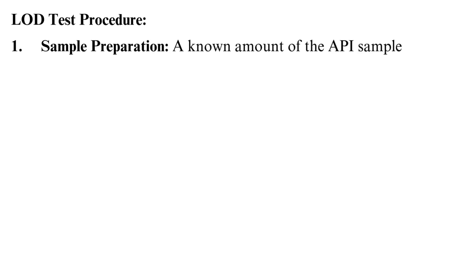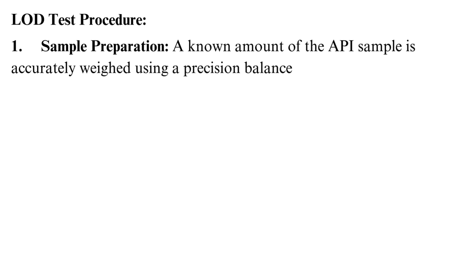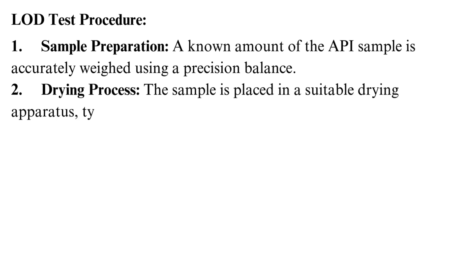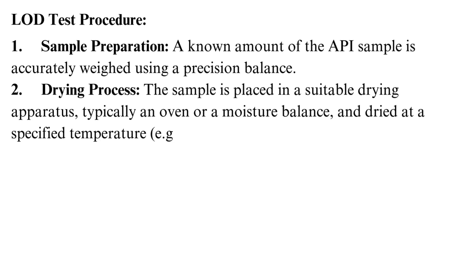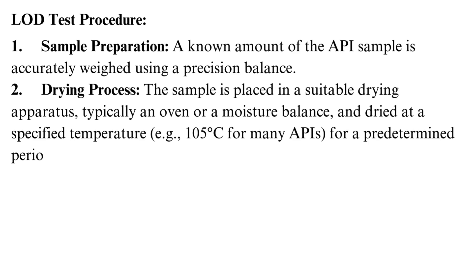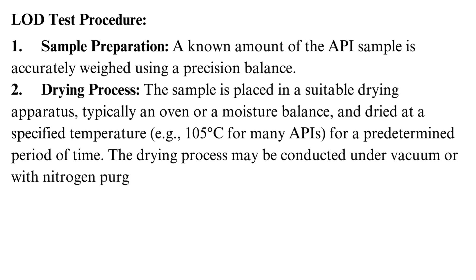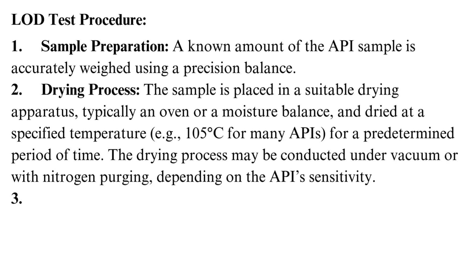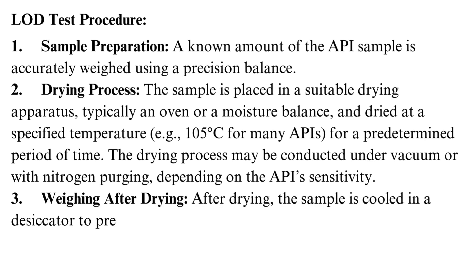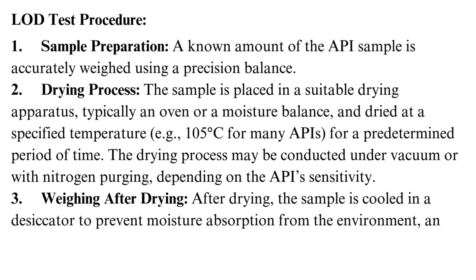LOD test procedure: A known amount of the API sample is accurately weighed using a precision balance. The sample is placed in a suitable drying apparatus, typically an oven or a moisture balance, and dried at a specified temperature — e.g., 105°C for many APIs — for a predetermined period of time. The drying process may be conducted under vacuum or with nitrogen purging, depending on the API's sensitivity. After drying, the sample is cooled in a desiccator to prevent moisture absorption from the environment, and its final weight is recorded.